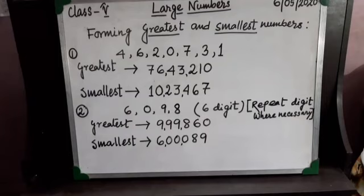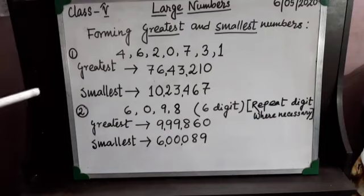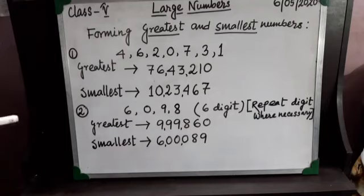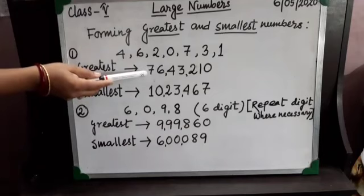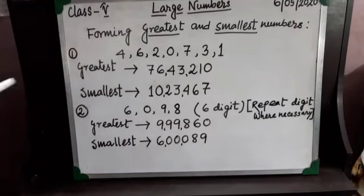Making the greatest number is very easy. Just arrange the digits in descending order — that means choose the biggest digit first, then arrange them from big to small. So I have written: first 7, then 6, then 4, 3, 2, 1, 0. And in this way my greatest number is 76,43,210.